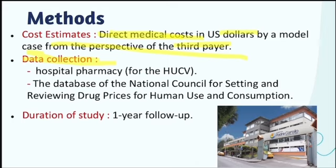Data was collected from the hospital pharmacy for the hospital setting, and from the database of the National Council for reviewing drug prices for the public health system. Duration was one year of follow-up. For Metformin, it was assumed the patient started the drug from diagnosis, while for Glibenclamide and Sitagliptin, medication was assumed to start after at least three months of follow-up.